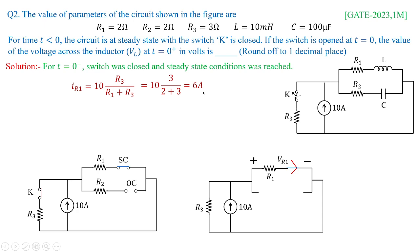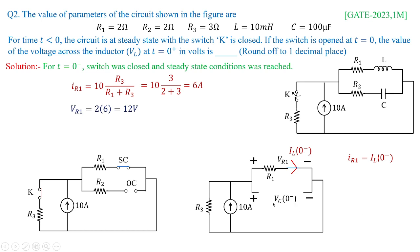This same current flows through the short circuit wire, so IL(0-) is equivalent to IR1 which is 6 amperes. The resistance voltage is 6 amperes multiplied by 2 ohms giving 12 volts across R1. Since the capacitor is in parallel with R1, the same 12 volts appears across the capacitor, so Vc(0-) equals 12 volts.